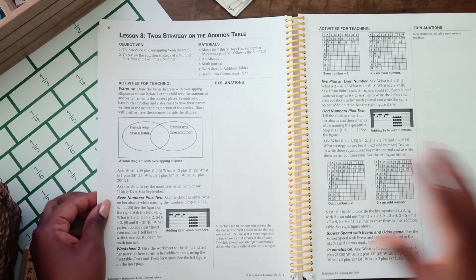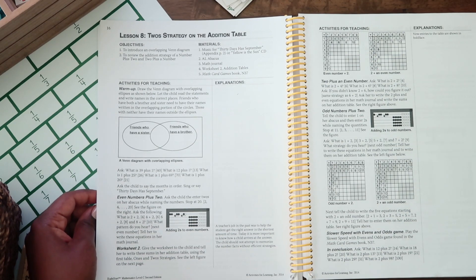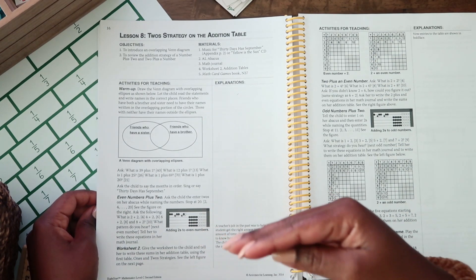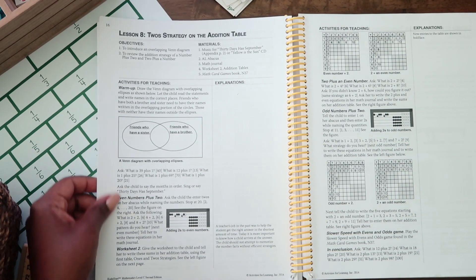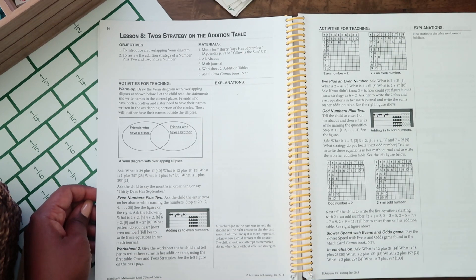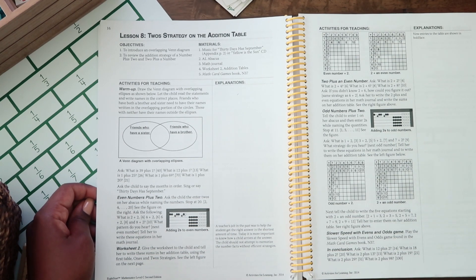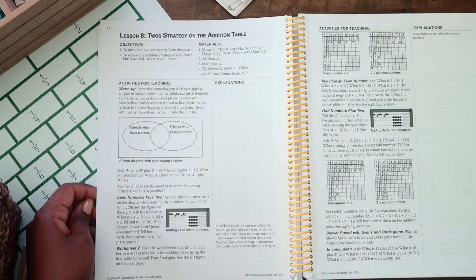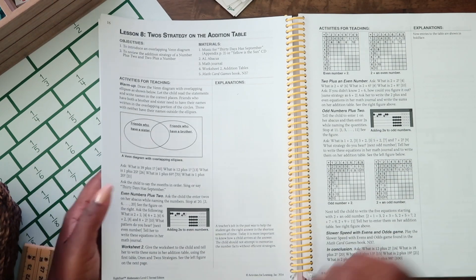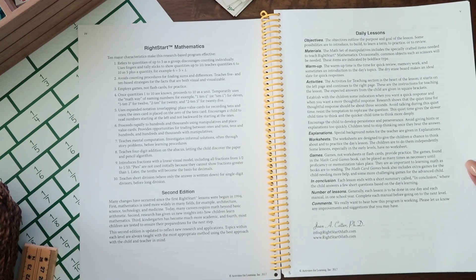Then you work your way through the warmup and the warmup just reviews concepts previously taught. And if you're going to be moving into another concept, it introduces it here in this section. Then they'll have the worksheet, which not all the lessons have worksheets like I said, but in this one it does. So they'll do their worksheet independently and you will just move through the lesson and you'll close out by reviewing what was taught. And they also have these explanations throughout, which I think is so great. So that's it.